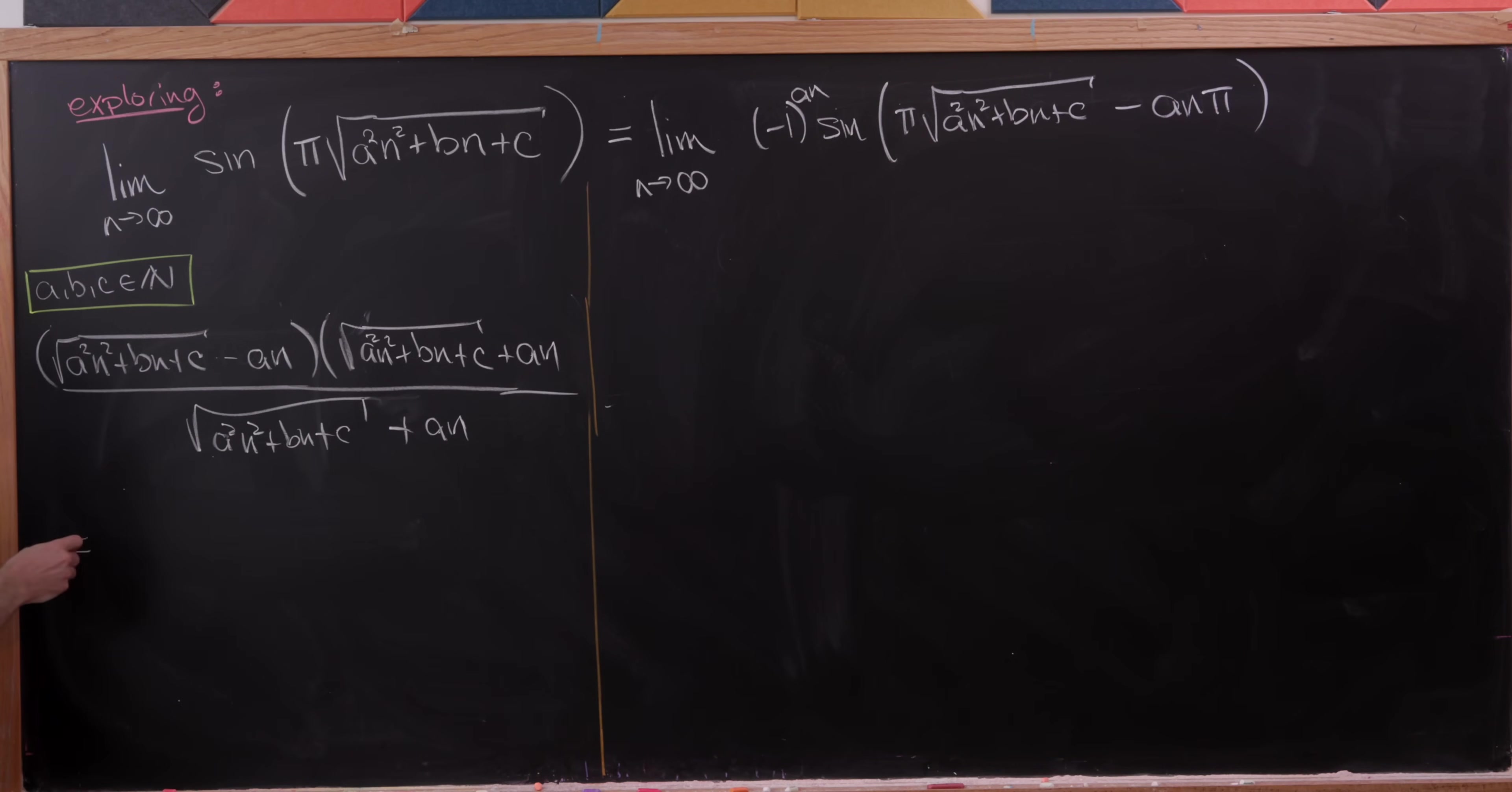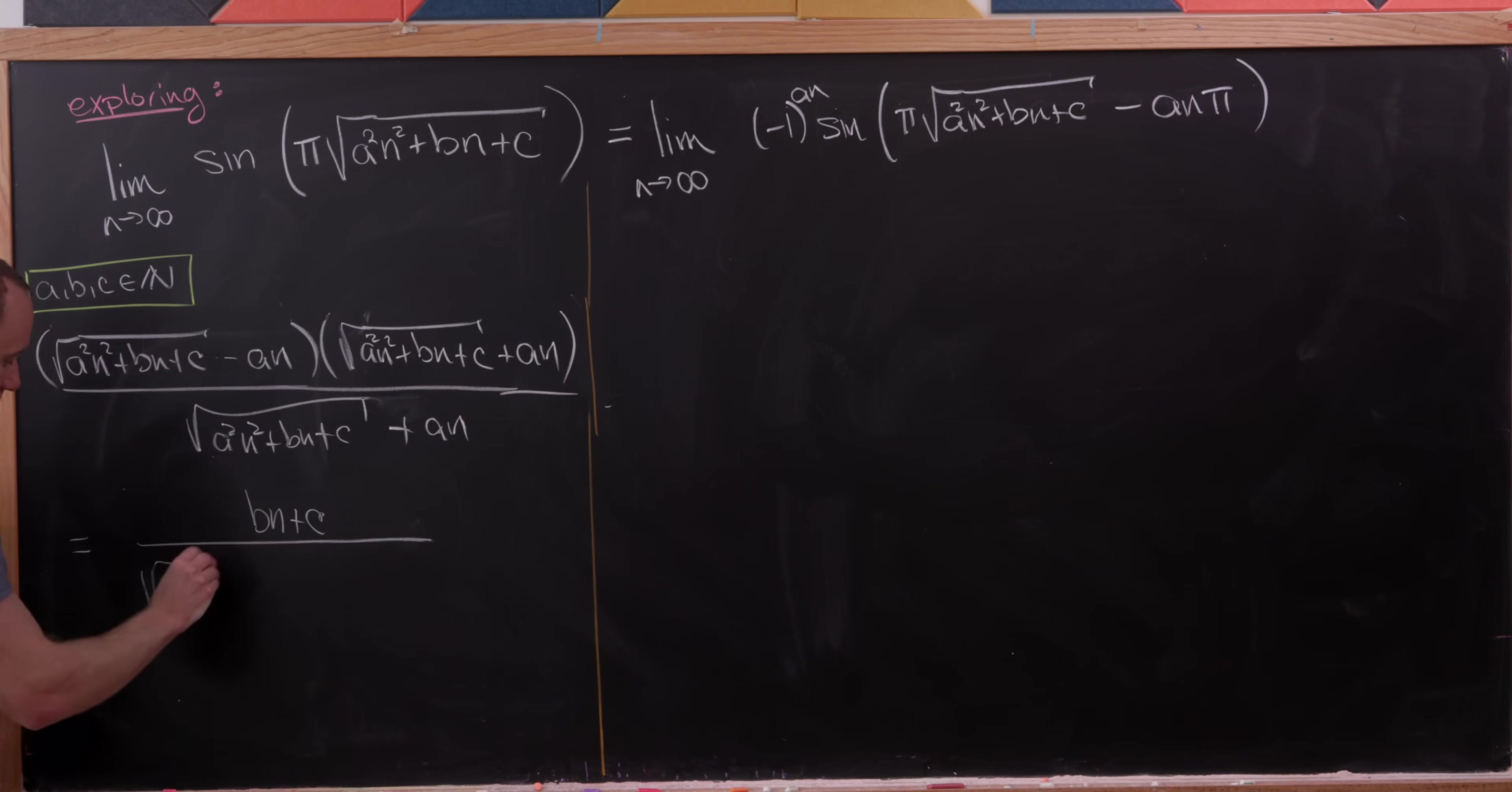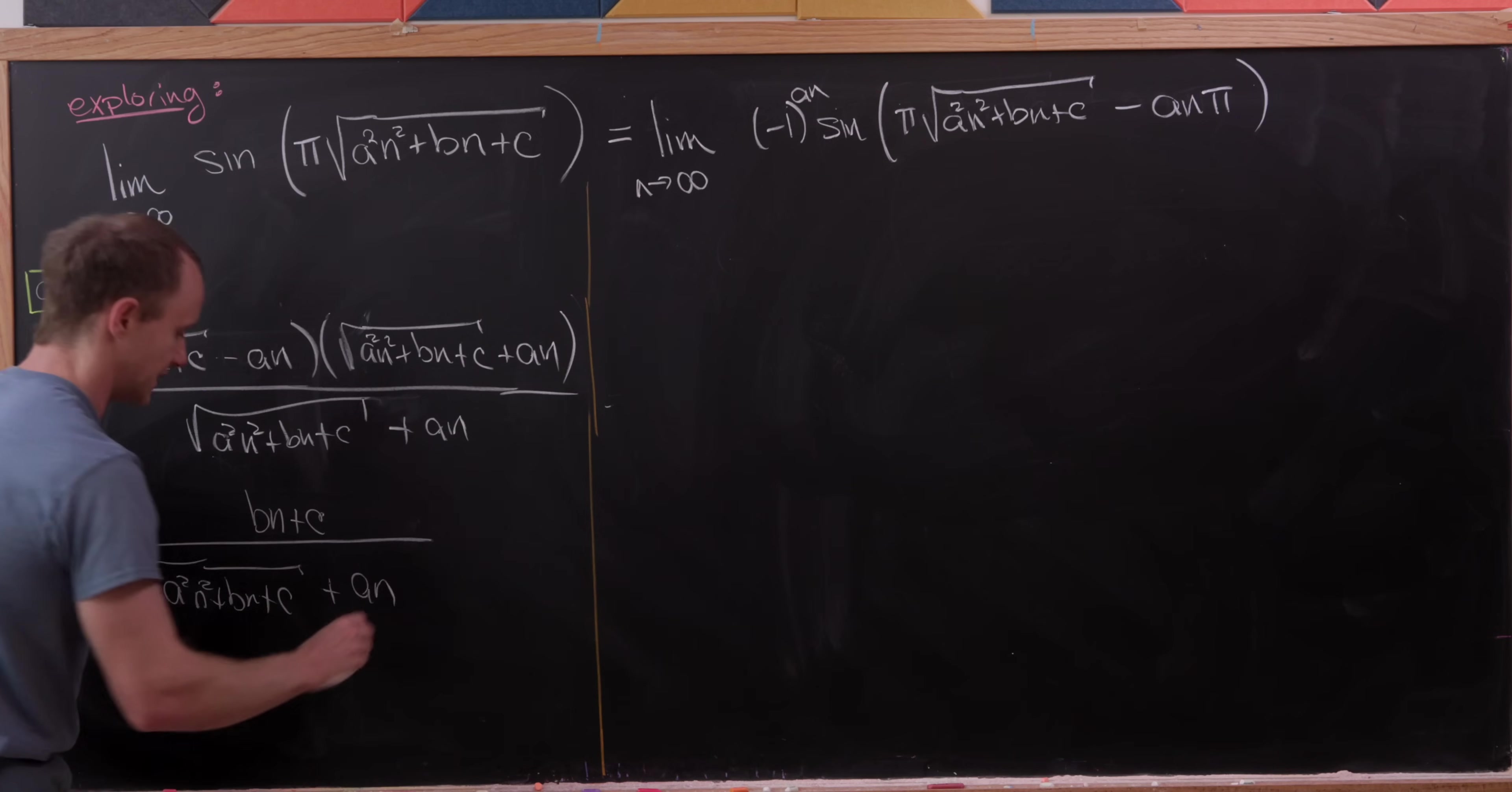But now look, this whole thing in the numerator will multiply out and we'll get some nice cancellation. The a²n² term will be canceled by what's created by these two terms. And then in the end, we're simply going to end up with bn plus c over the square root of a²n² plus bn plus c, and then plus a times n.